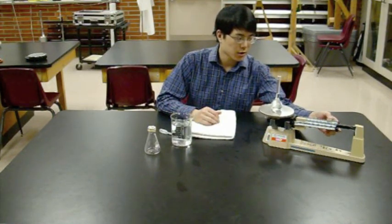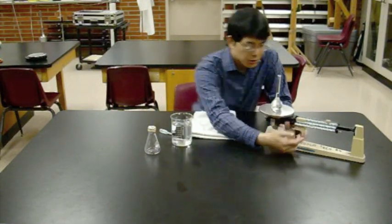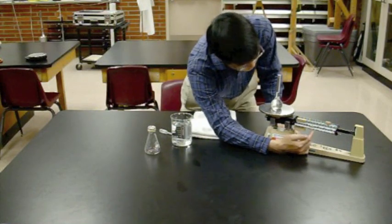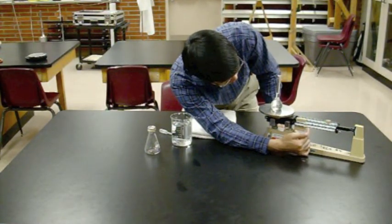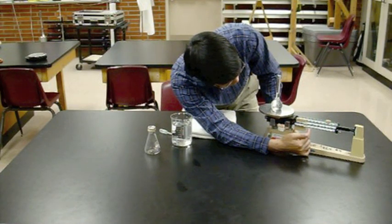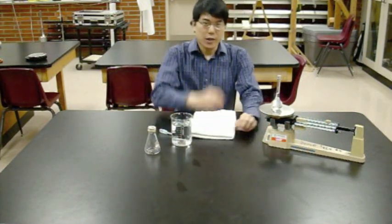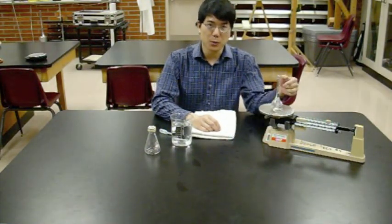It tips the scale right there. Back off one. And then use the lightest slider until you get it balanced. There we go. So that's your mass measurement for the volumetric flask with the water in it.